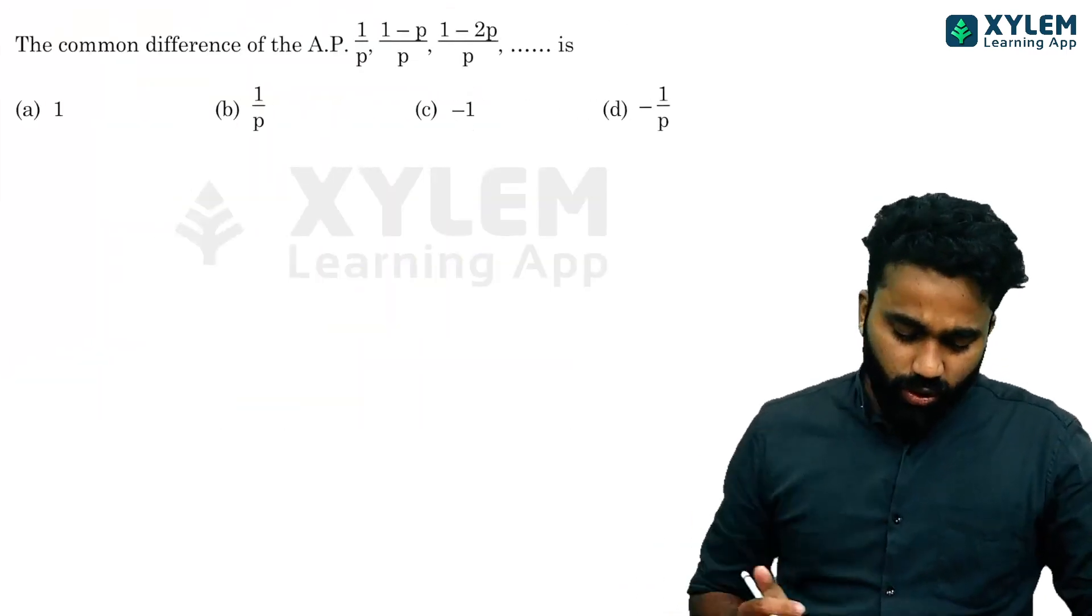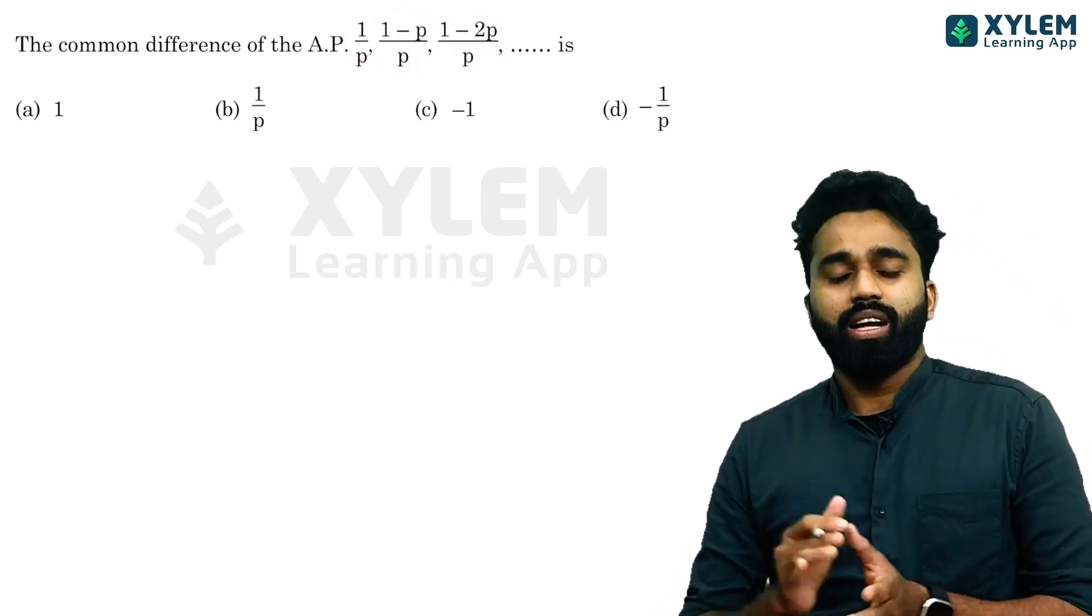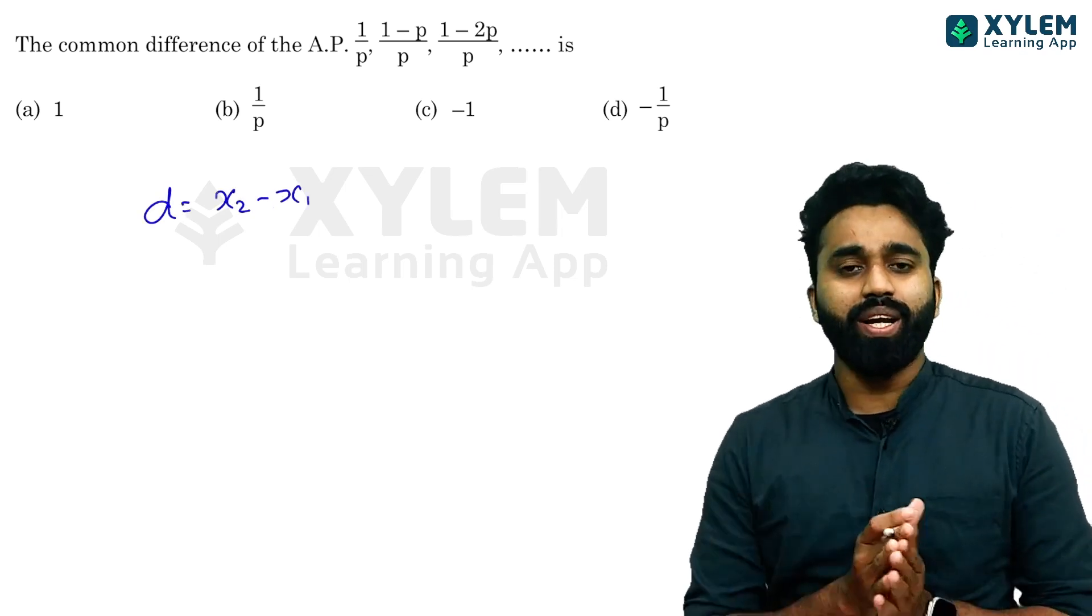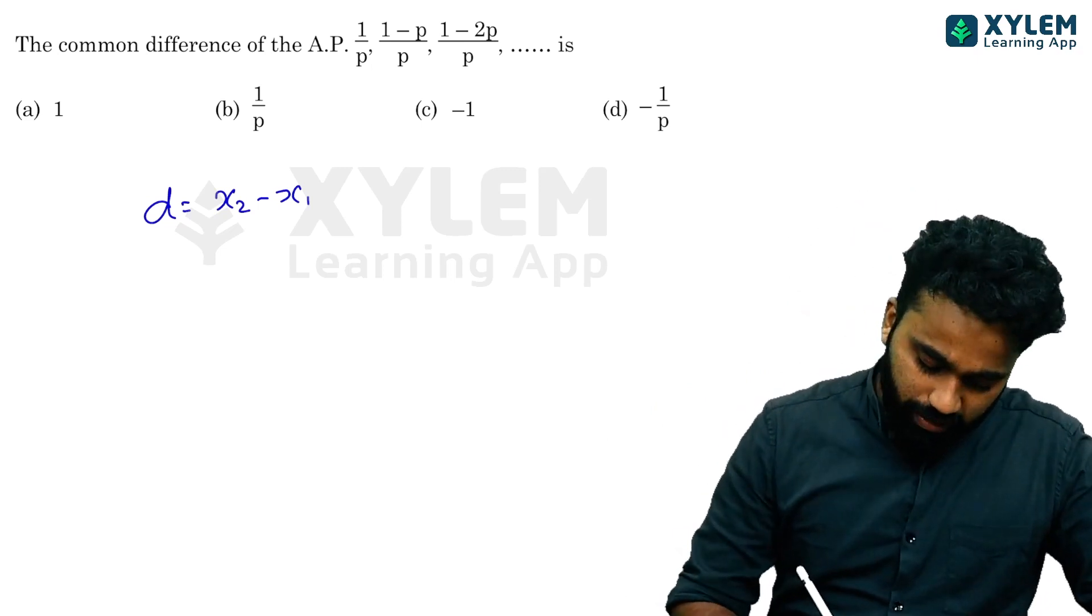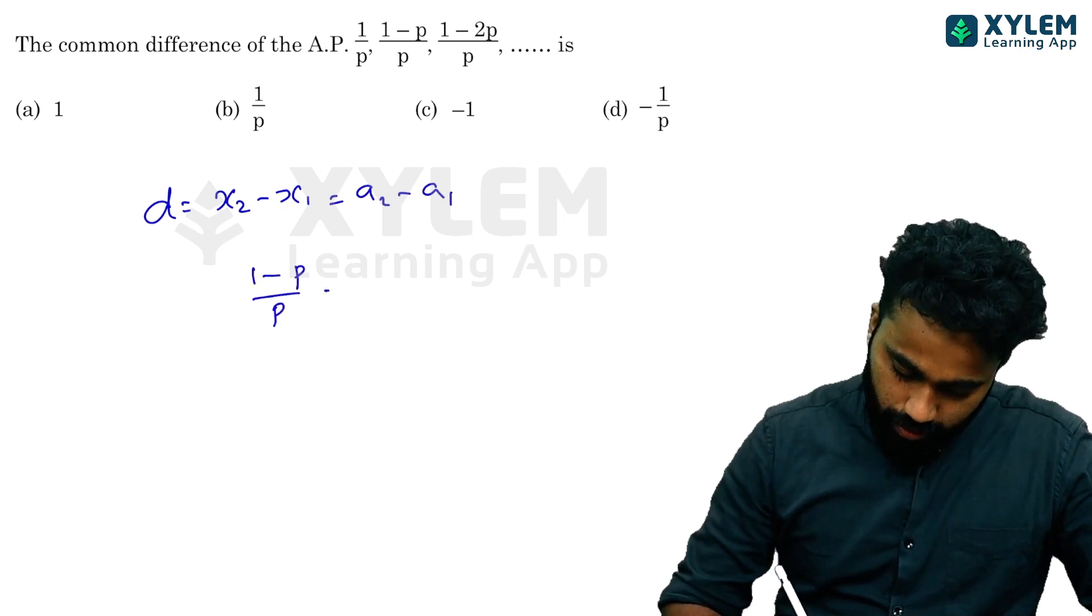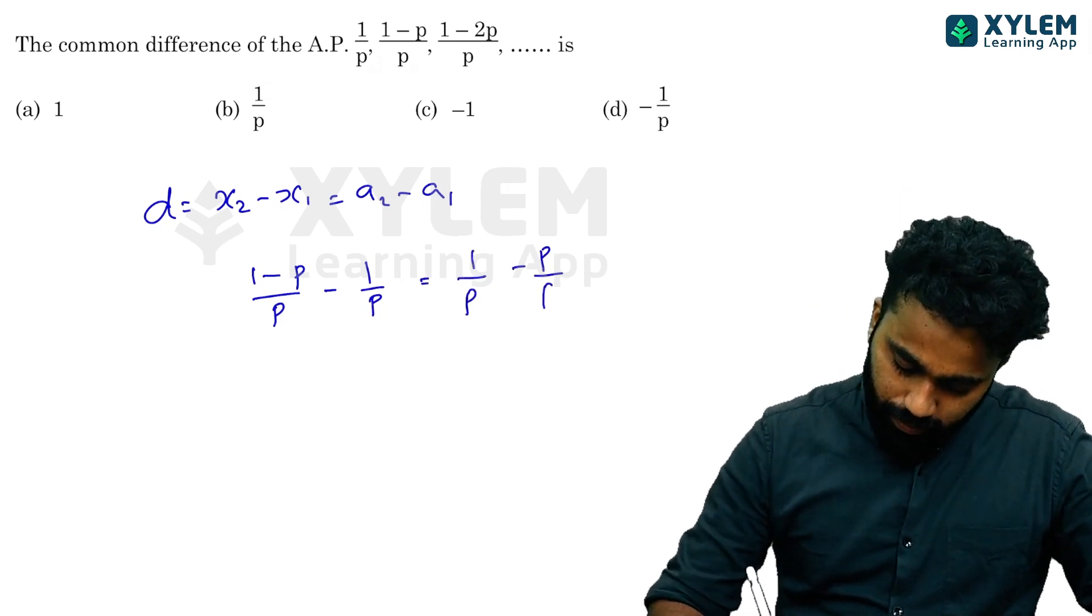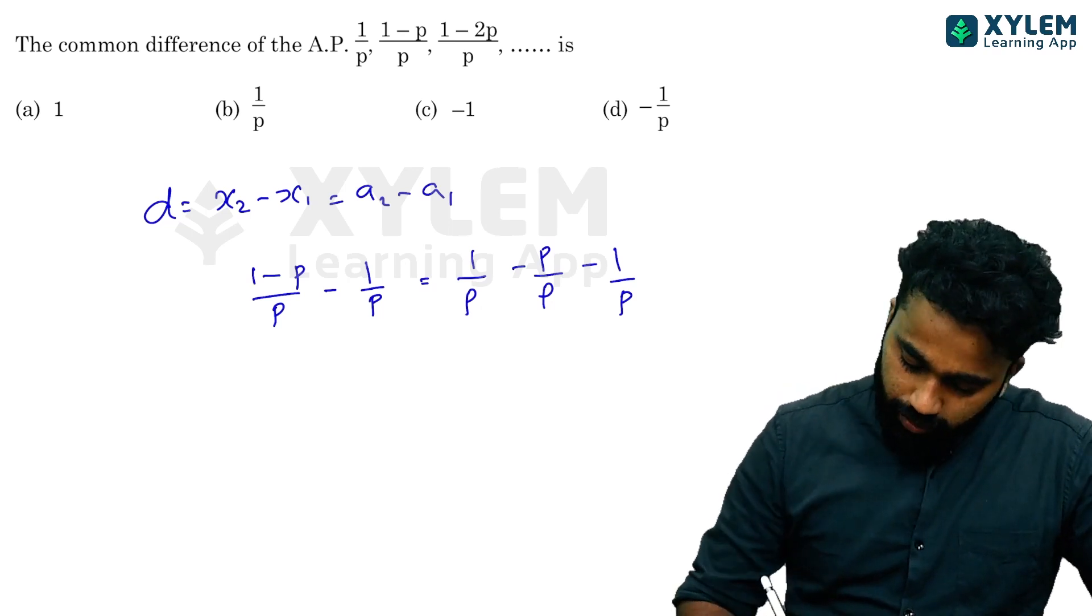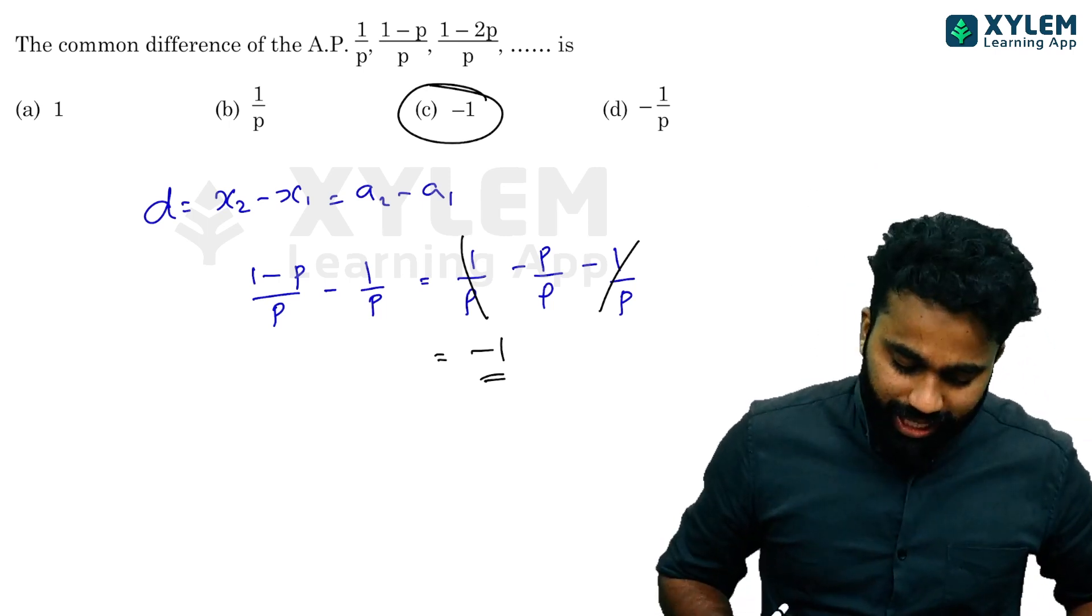Here is another question. The common difference of an AP. Common difference equals second term minus first term. Here it's a₂ minus a₁, which is 1 minus p divided by p minus 1 divided by p. Taking common denominator, we get 1 minus p minus 1 divided by p, which equals minus p divided by p, equals minus 1. That's the common difference.